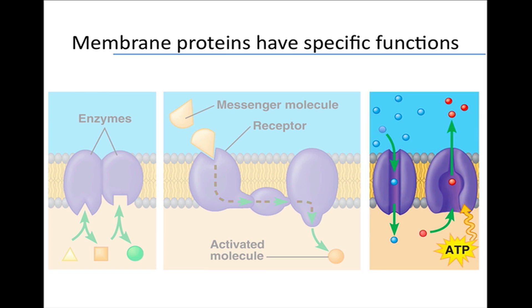A final important function of membrane proteins is in transport. Membranes exhibit selective permeability — that is, they allow some substances to cross more easily than others. Nonpolar molecules can easily pass through the membrane. In contrast, polar molecules have a difficult time crossing the membrane and therefore pass through membrane proteins that facilitate their transport, usually with the use of energy.